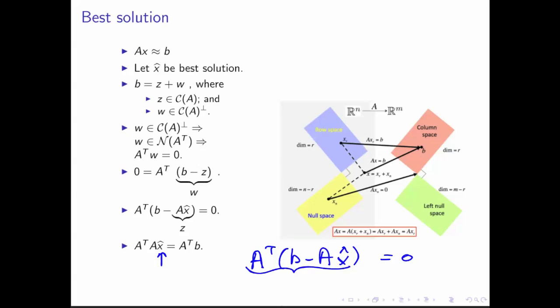But we can distribute A transpose, and we find that A transpose B minus A transpose A x hat is equal to zero. And then we can bring this to the other side and flip the whole thing, and we get this right here.